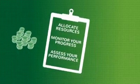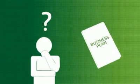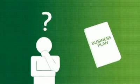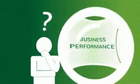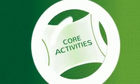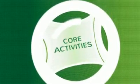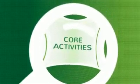So what are the main steps in reviewing and updating your business plan? You'll need to review all aspects of your current business performance. This means looking at your core activities and seeing how efficiently you're currently working.